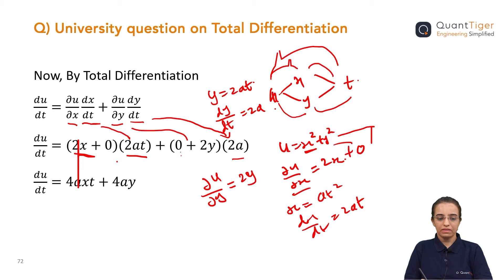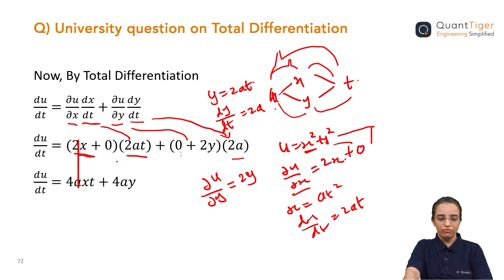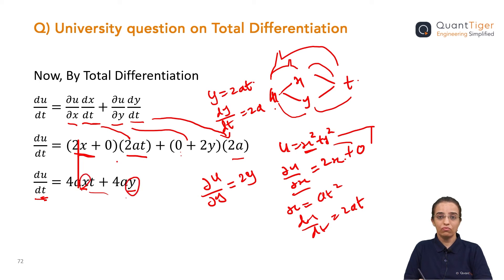By simply expanding and multiplying these values, what you get is 4axt plus 4ay, which is the value of du by dt. Now, x and y are involved in this answer, which we do not want — because when we differentiate totally with respect to any variable, the final answer should be in terms of that variable only. Here, we are differentiating with respect to t, so the whole answer should be in terms of t.